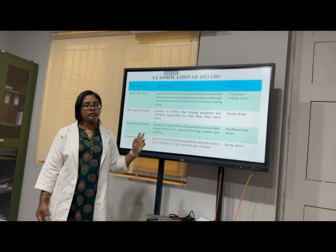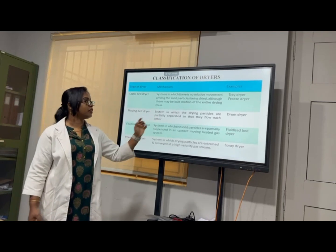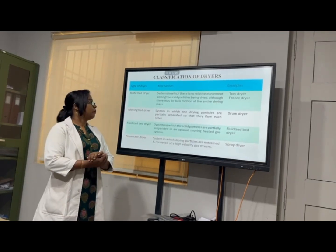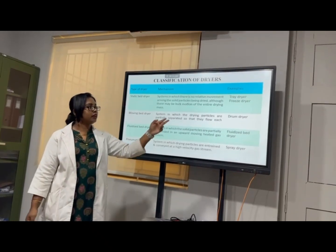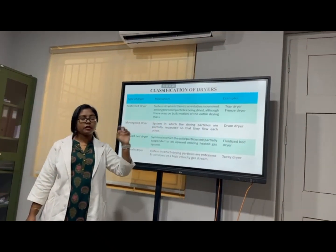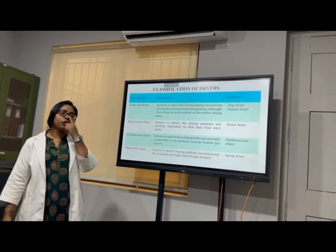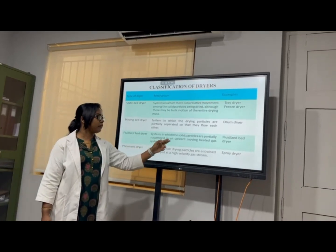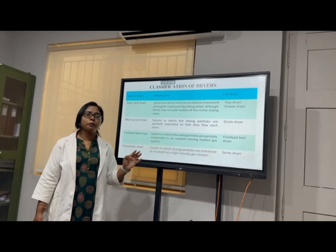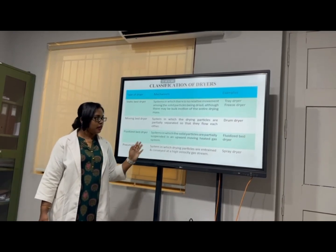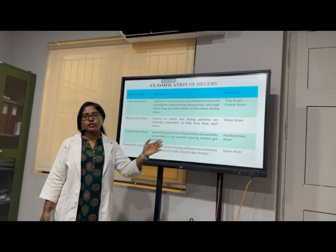The mechanism of the moving bed dryer here, the system which drying particles is partially separated so they flow each other. That type of dryer example is the drum dryer. The next one is the fluidized bed dryer. Here the system in which solid particles is partially suspended in the upward moving heated gas system. The example is the fluidized bed dryer.